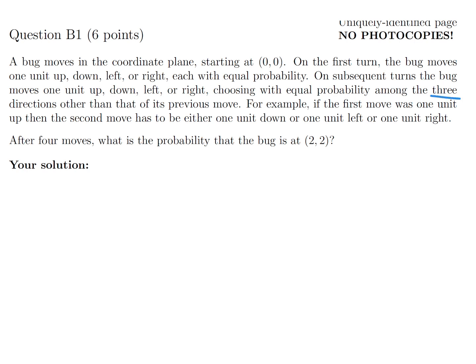For example, if the first move was one unit up, the second move has to be either down, left, or right. After four moves, what is the probability the bug is at (2,2)?